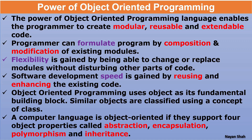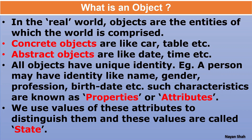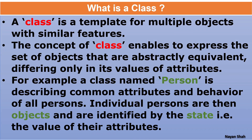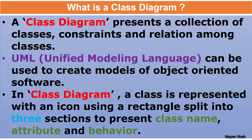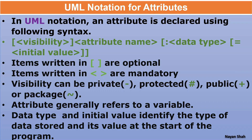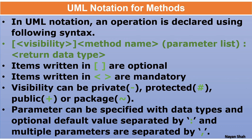Hello students. In the previous lecture we studied about what is object-oriented programming, the power of object-oriented programming, what is an object and what is a class, the relations between class and object, and we also saw the class diagram which is divided into three parts comprising of class name, class attributes, and behavior of the class, and then we saw notations for the attributes and methods.